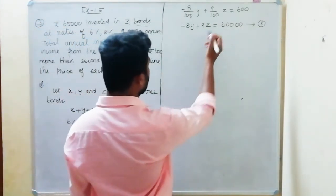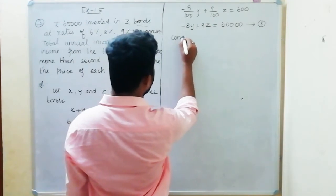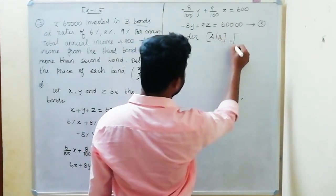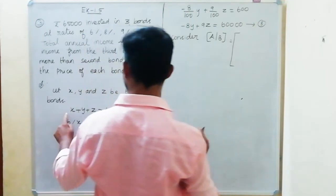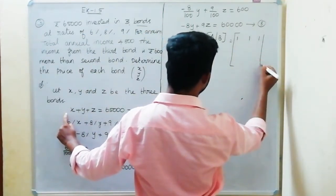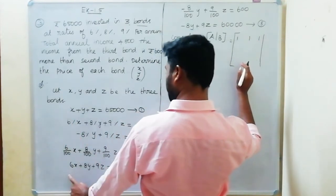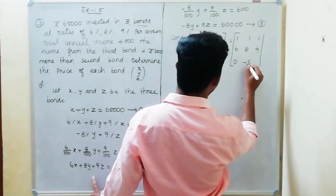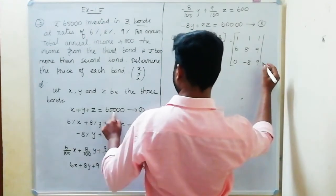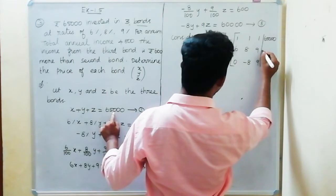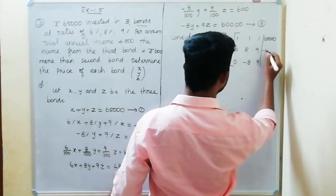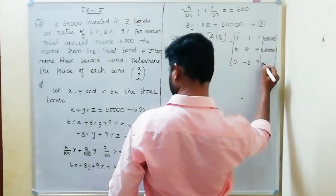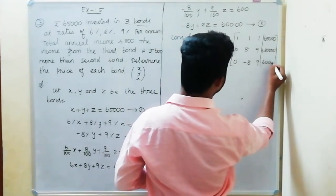Now we will solve these three equations using the elimination method. Writing in matrix form: first equation is 1, 1, 1 equals 65,000. Second equation is 6, 8, 9 equals 480,000. Third equation is 0, minus 8, 9 equals 60,000.